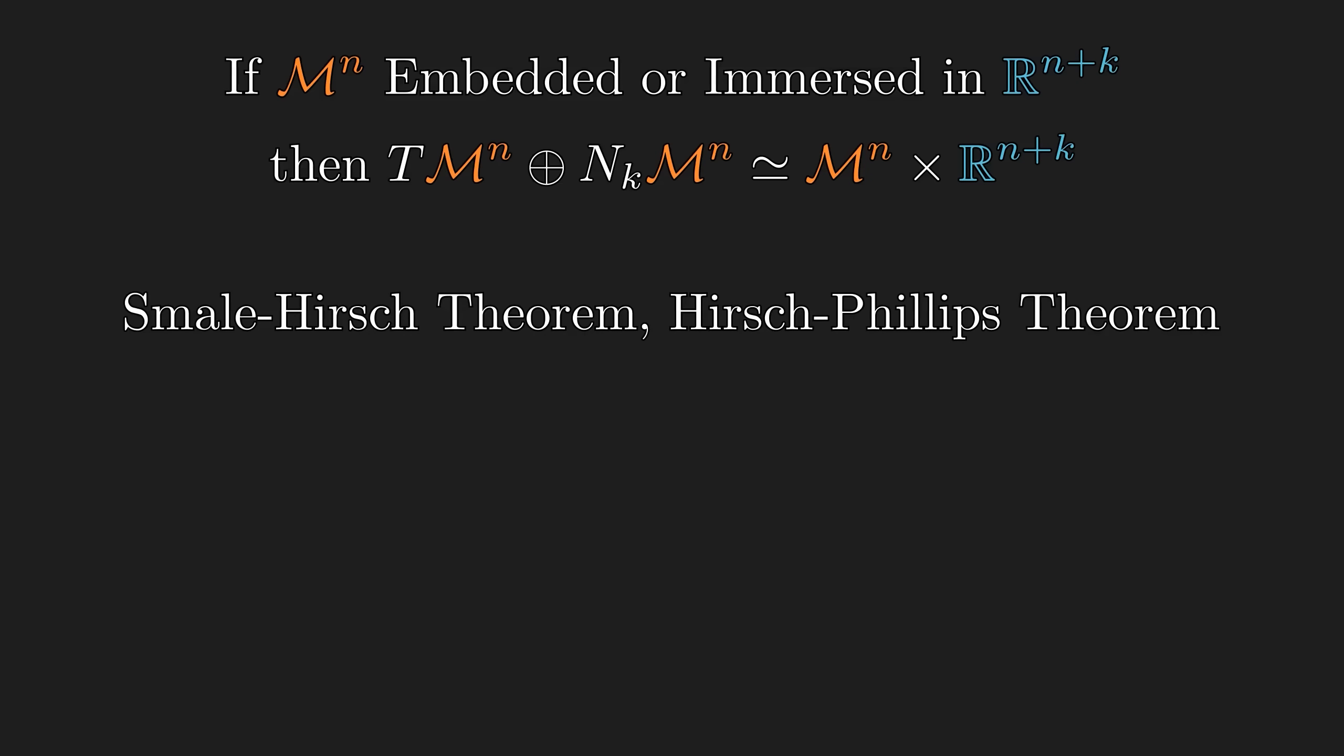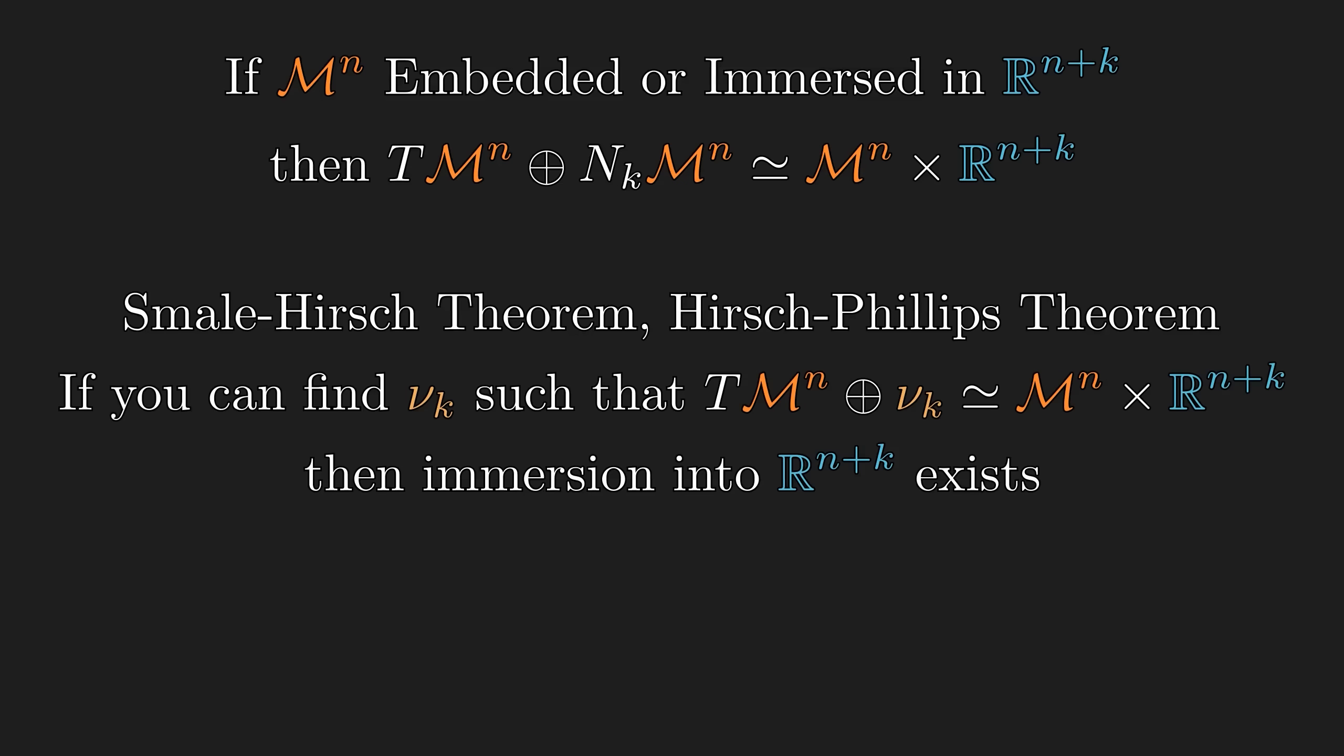As a partial converse, there is a very strong criterion for immersibility. Let's take a look at a version of those theorems. The tangent bundle is an intrinsic bundle that lives on the manifold, while the normal bundle exists only when the manifold is mapped into an ambient space.